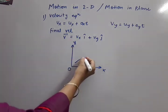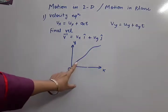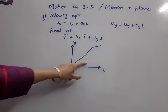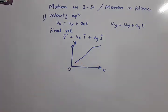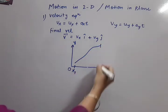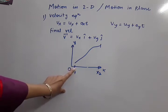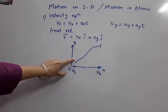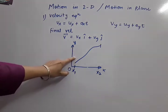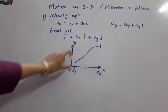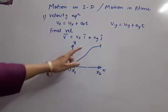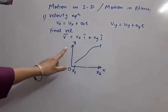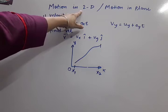The object is moving this way. When it is starting from this point, you can see its displacement is in the x-direction also — its x coordinate changes from x1 to x2. In the same manner, its height also increases, meaning its vertical motion is also covered. So when the object is moving in the x-y plane, y-z plane, z-x plane, or any such plane, the object's motion is said to be motion in 2D — motion in two dimensions.